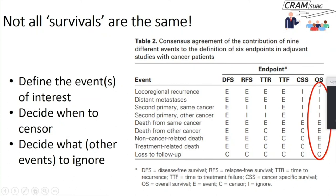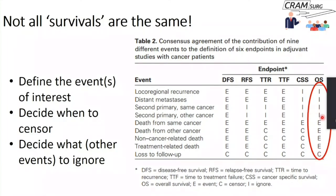Overall survival (OS): the endpoint is death from any cause — whether from the same cancer, another cancer, non-cancer-related death, or treatment-related death. Any death counts as an event. Disease recurrences or a second cancer are ignored. If a patient is lost to follow-up, they are censored. So if you're interested in overall survival as your endpoint, this is how you define events of interest, when to censor, and what to ignore.